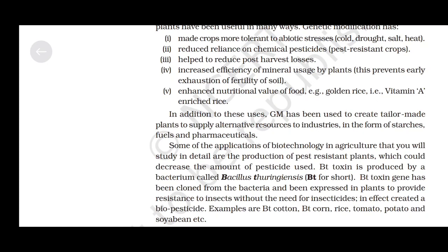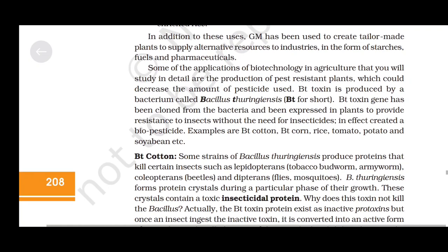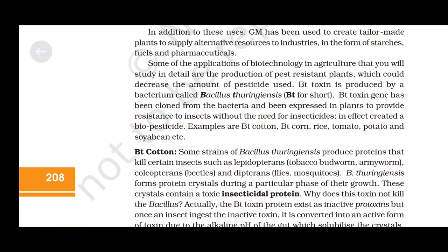One application of biotechnology in agriculture is the production of pest-resistant plants, which could decrease the amount of pesticide used. Bt toxin is produced by a bacterium called Bacillus thuringiensis, or Bt for short. The Bt toxin gene has been cloned from the bacteria and expressed in plants to provide resistance to insects without the need for insecticides, in effect creating a biopesticide. Examples are Bt cotton, Bt corn, rice, tomato, potato and soya bean.